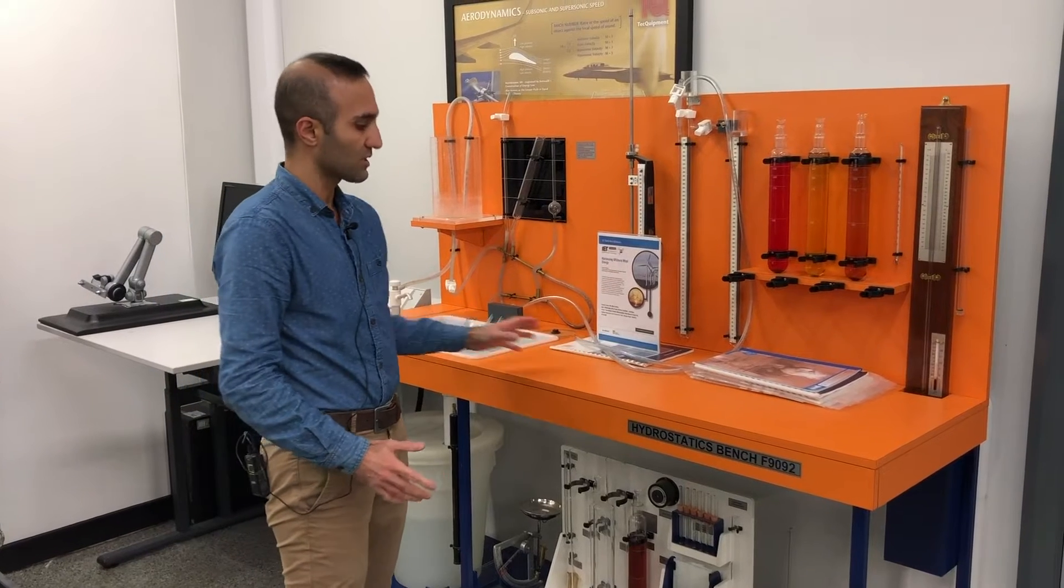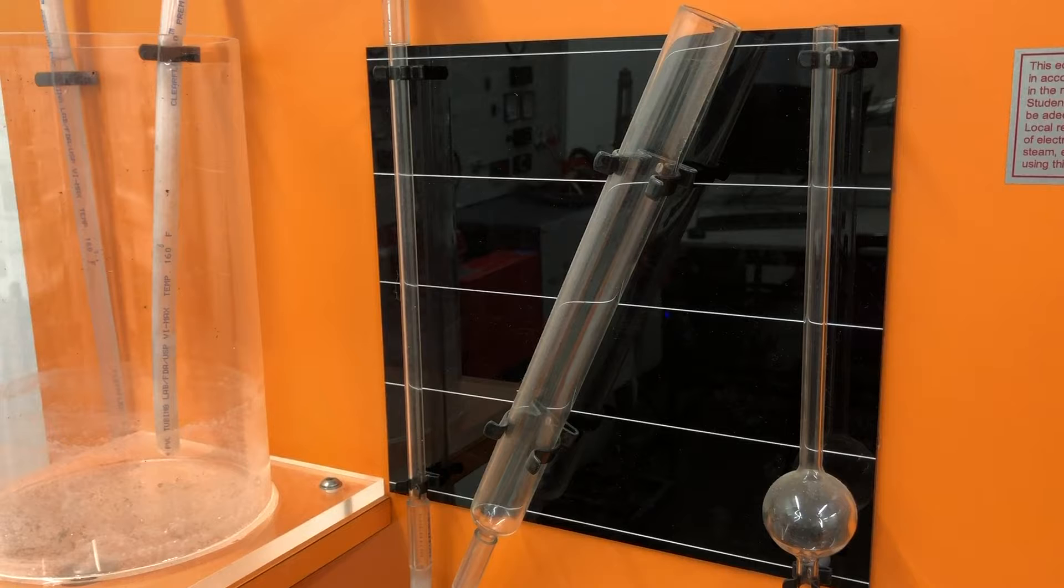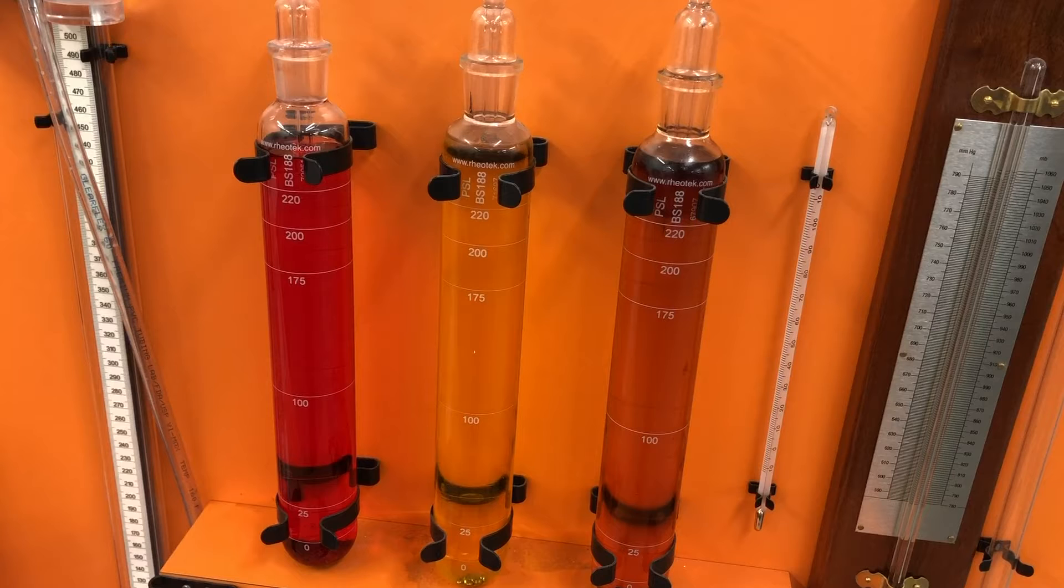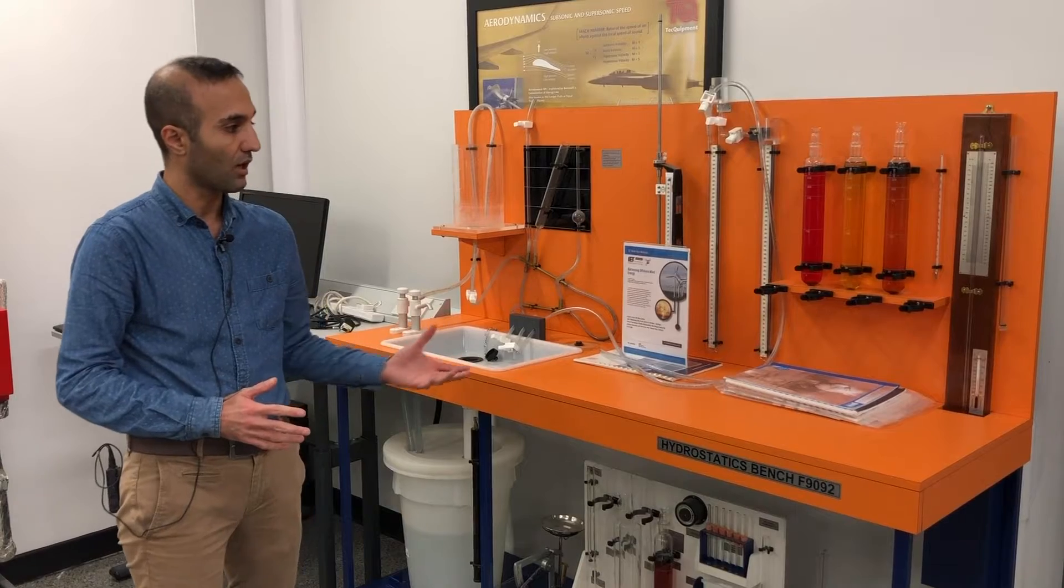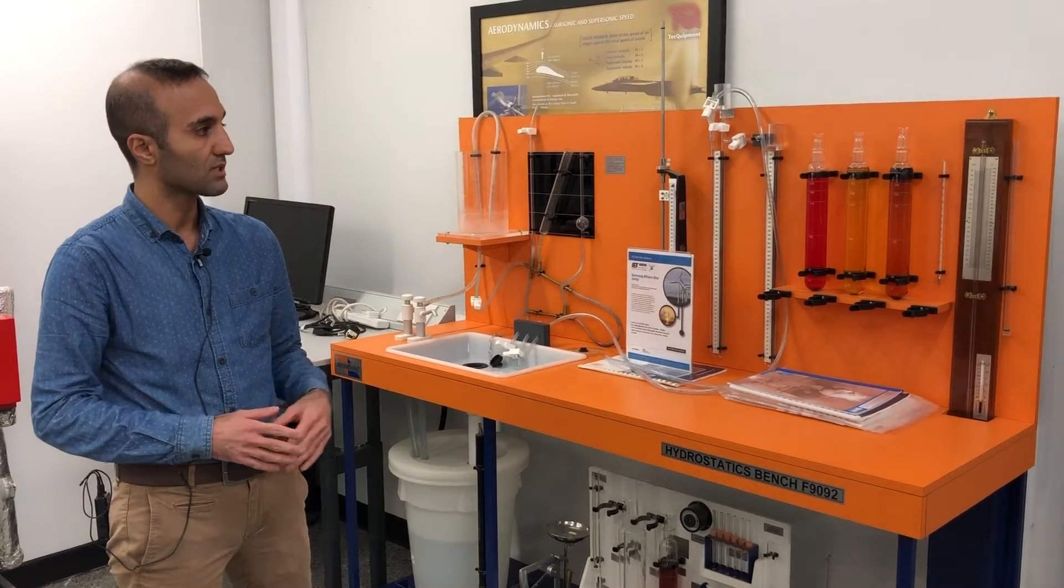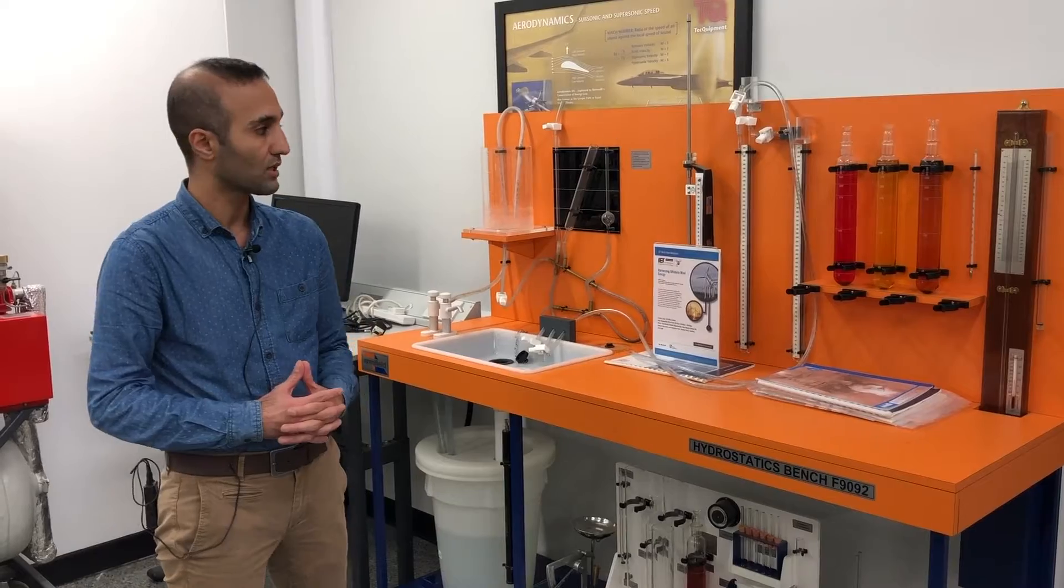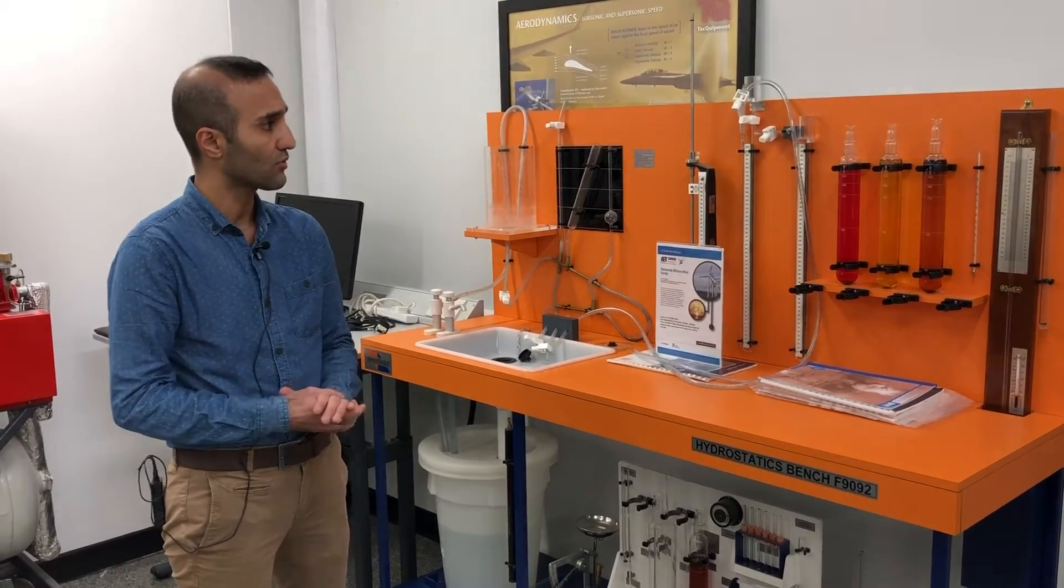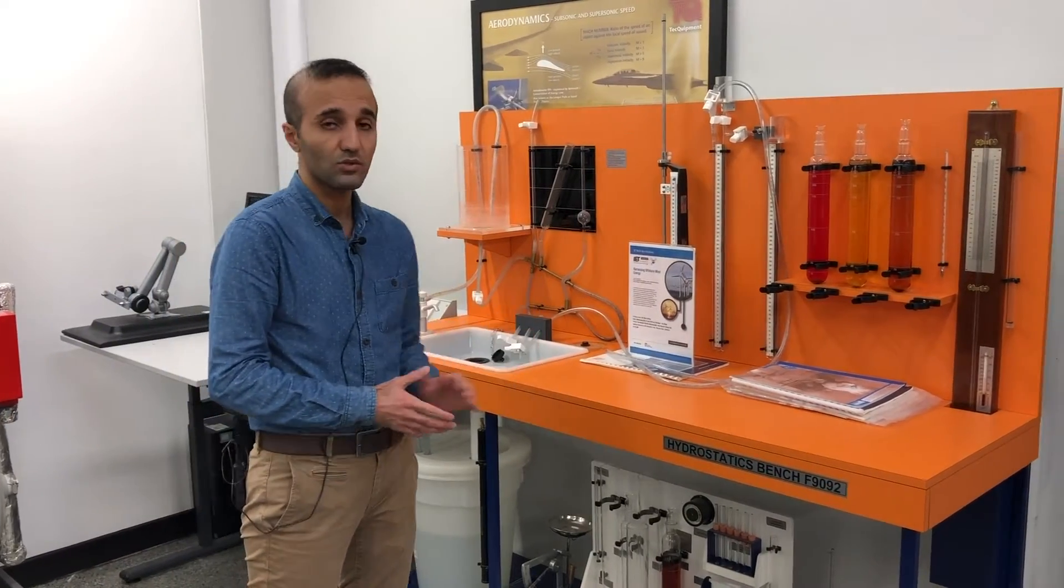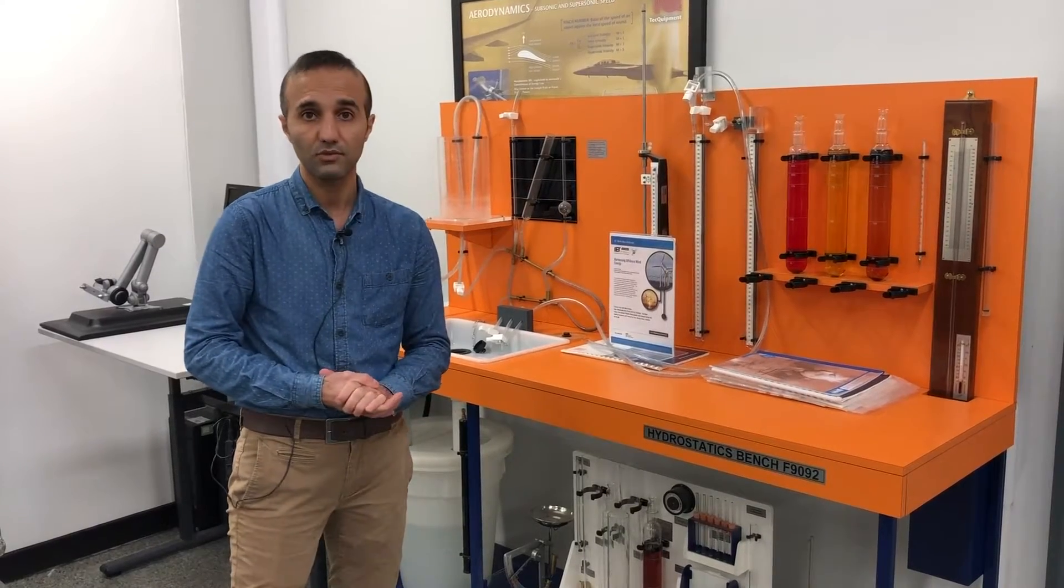The first apparatus that we have is called the hydrostatic bench. This bench helps you to measure some basic fluid properties like viscosity, density, and with the help of some hydrometers you would be able to take some extra measurements along with temperature, pressure, static pressure or dynamic pressure, and so on. This is quite useful for level 3 and level 4 as fundamentals of fluid mechanics.